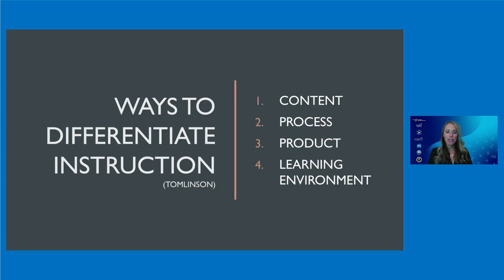When talking about differentiation, it's important to note that according to Tomlinson, there are four ways to differentiate instruction: content, process, product, and learning environment. Tomlinson and McTighe note that many teachers attempt to differentiate instruction by giving struggling learners less and advanced learners more, but this isn't particularly helpful. So when we differentiate, we are making changes to one or more of these elements. Today, we will explore ideas around process, learning environment, as well as assessments and goal setting.